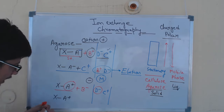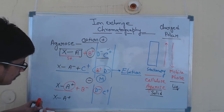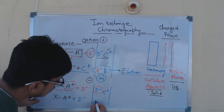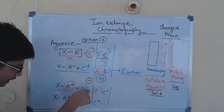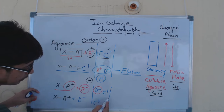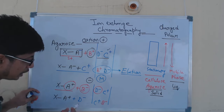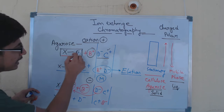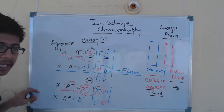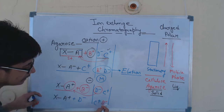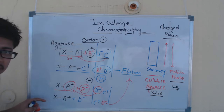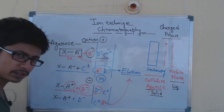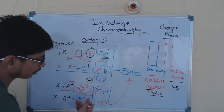In anion exchange, A+ will pair with D− from the mobile phase, while C+ and B− will move into the mobile phase. D− attaches to A+, and those unbound molecules are removed. This removal is also known as elution.